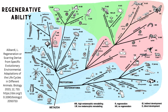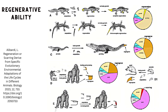Regeneration is a natural process by which living organisms repair or replace damaged or lost cells, tissues, or organs, restoring their structure and function. It ranges from the biological mechanisms of healing minor wounds to the regrowth of entire body parts in some species. Regeneration plays a vital role in maintaining health and life across various organisms.